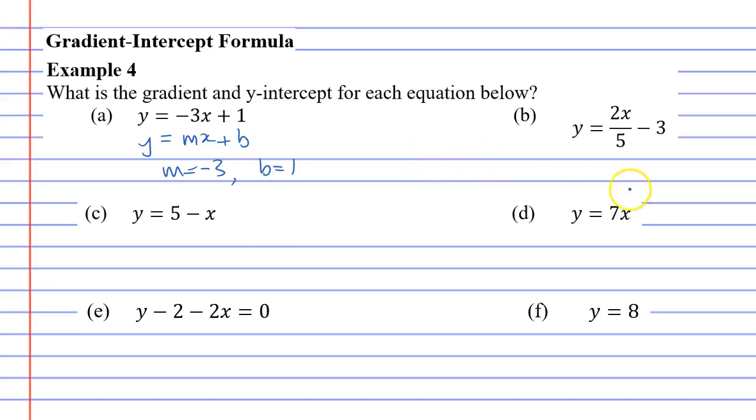It gets harder for the other ones. Let's look at question B, y equals mx plus b. b is really obvious, it's negative 3, and m is the number in front of x, which in this case is just 2 over 5.